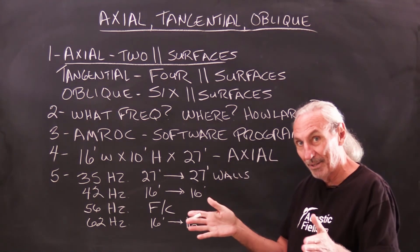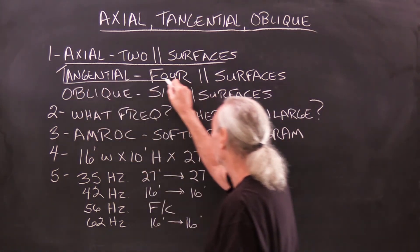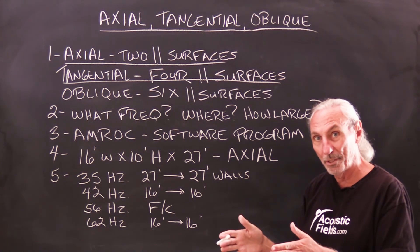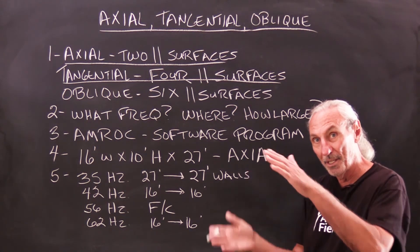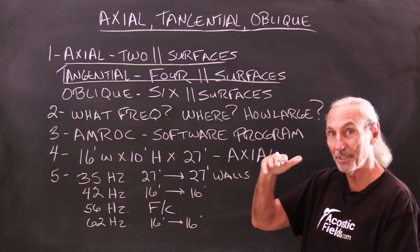Remember we've got three areas that we have to be concerned about. So then we have the tangential which is four parallel surfaces. So we could have two sidewalls, a floor and a ceiling. We could have two sidewalls, a front and a rear. We could have a front and a rear and a floor and a ceiling.